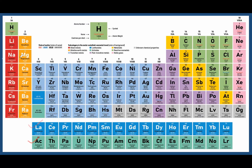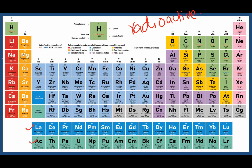Two interesting series are lanthanides and actinides. A question arises: why are they not placed in the main body of the table according to increasing atomic number? The answer is their chemical properties — elements are arranged not only by atomic number but also by their properties. Lanthanides and actinides are radioactive in nature, so they are placed separately at the bottom. They are named after their starting elements, lanthanum and actinium.